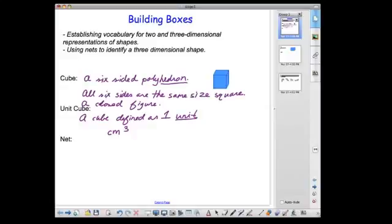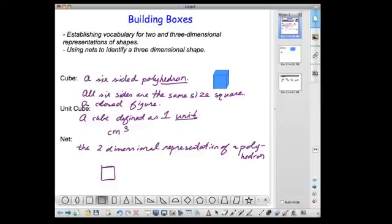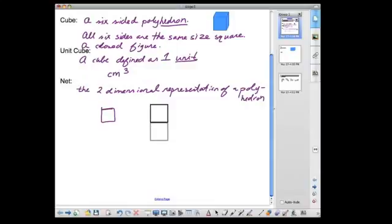A net is the two-dimensional representation of a polyhedron, but the net needs to be able to fold into the three-dimensional shape. The two-dimensional version of a cube is not just a square. The net of a cube is made up of six squares because a cube has six surfaces. It's really important to think about the number of surfaces before creating its net.